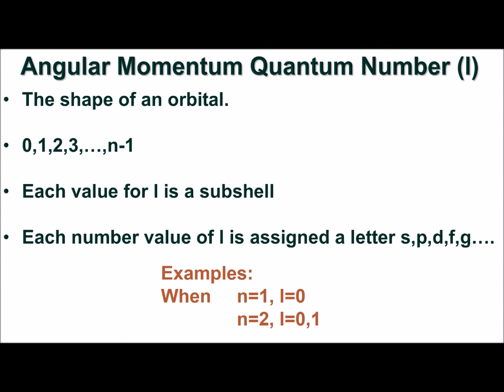The angular momentum quantum number, L, corresponds to the shape of the orbital. It has permitted values that start at 0 and increase to n-1. So, if n is 2, then L can be 0 or 1. The combination of n and L describe the energy level of the electron. L is often referred to as a subshell.